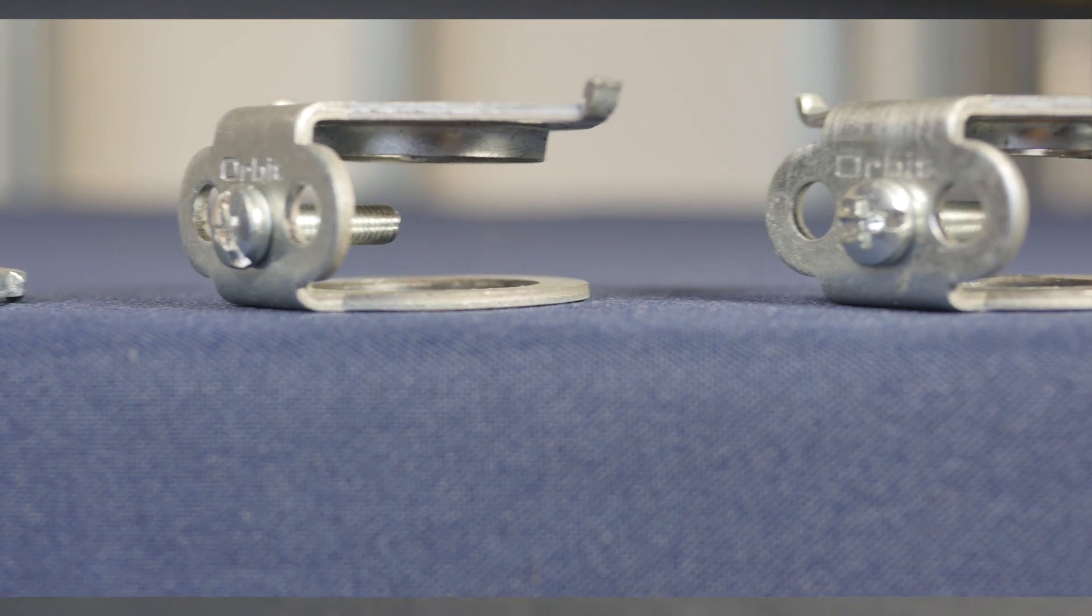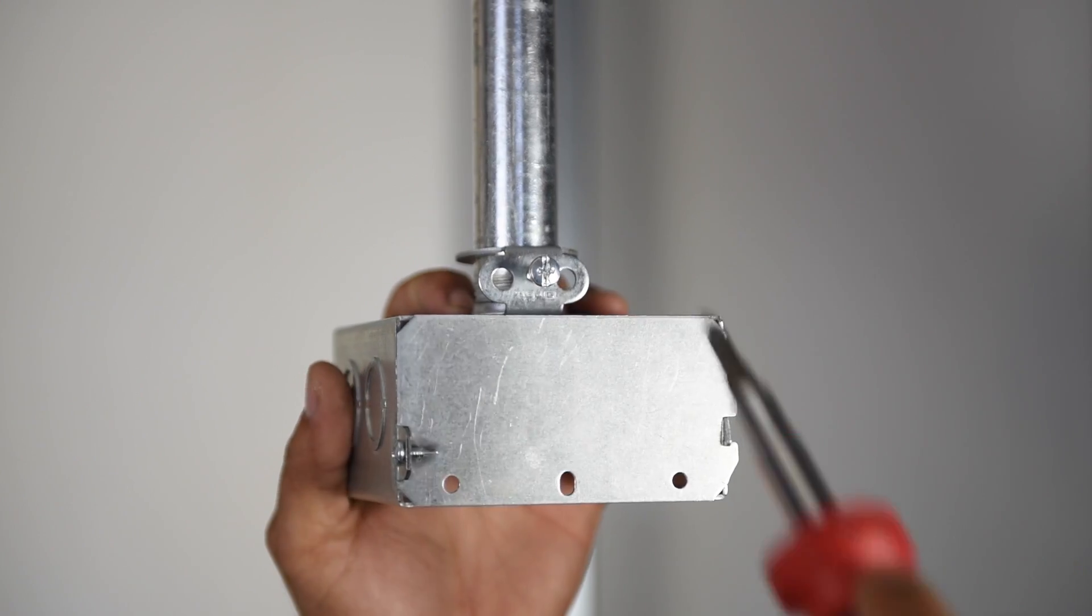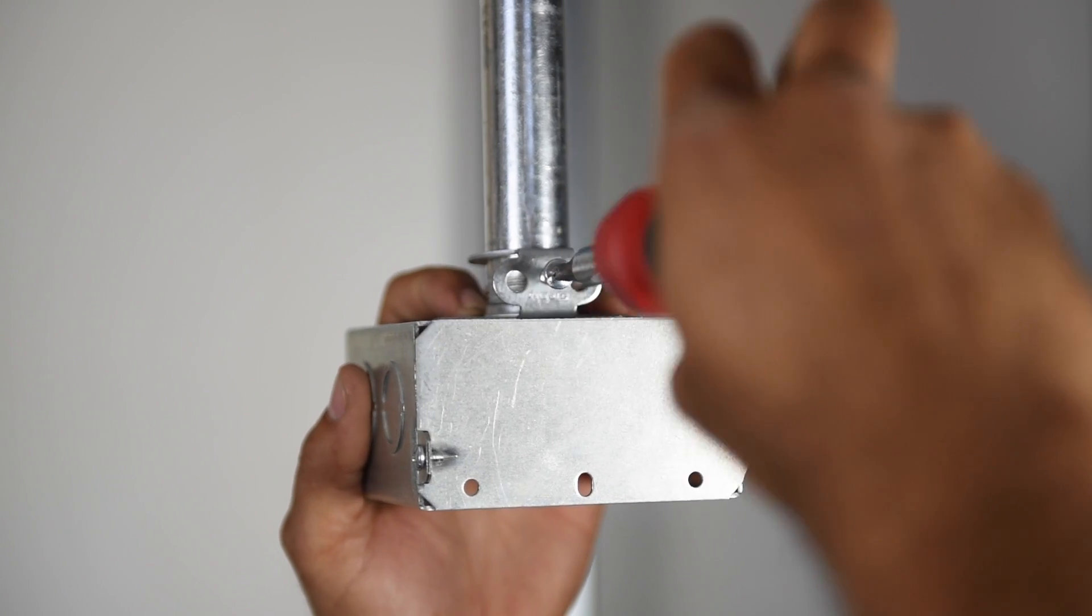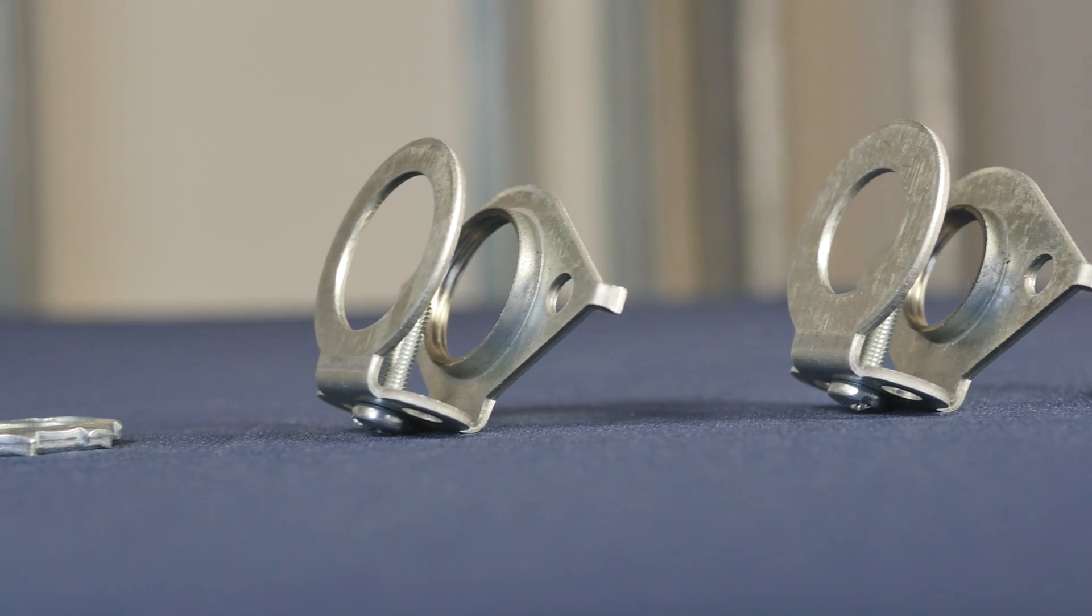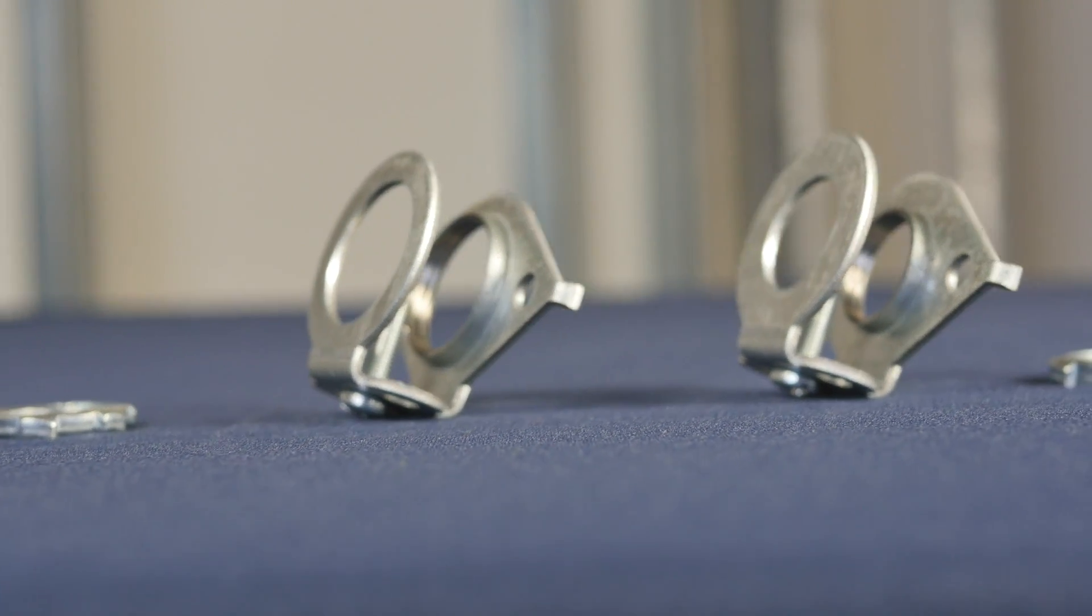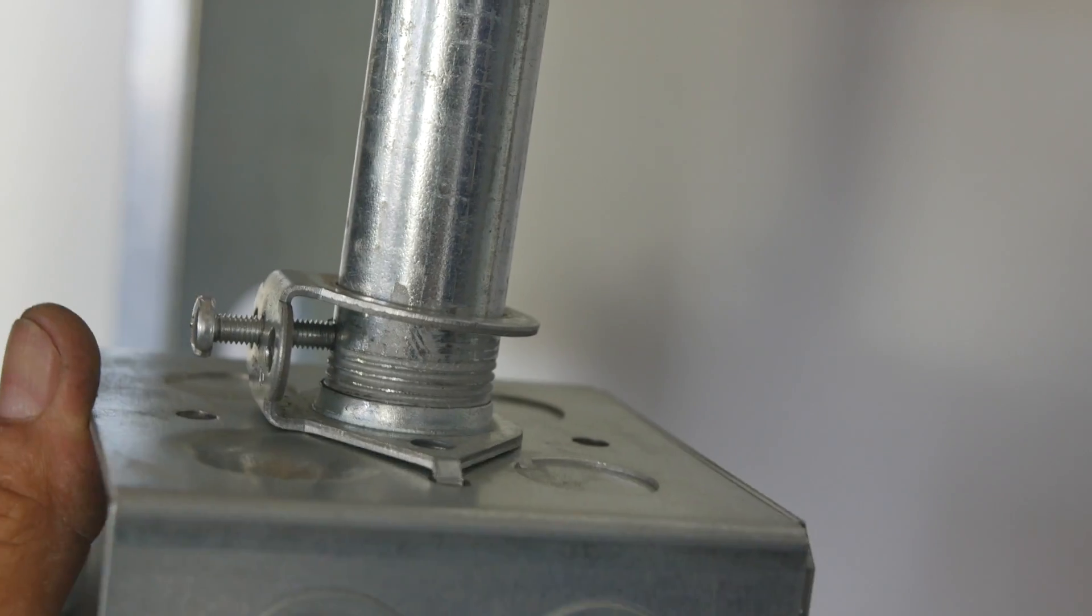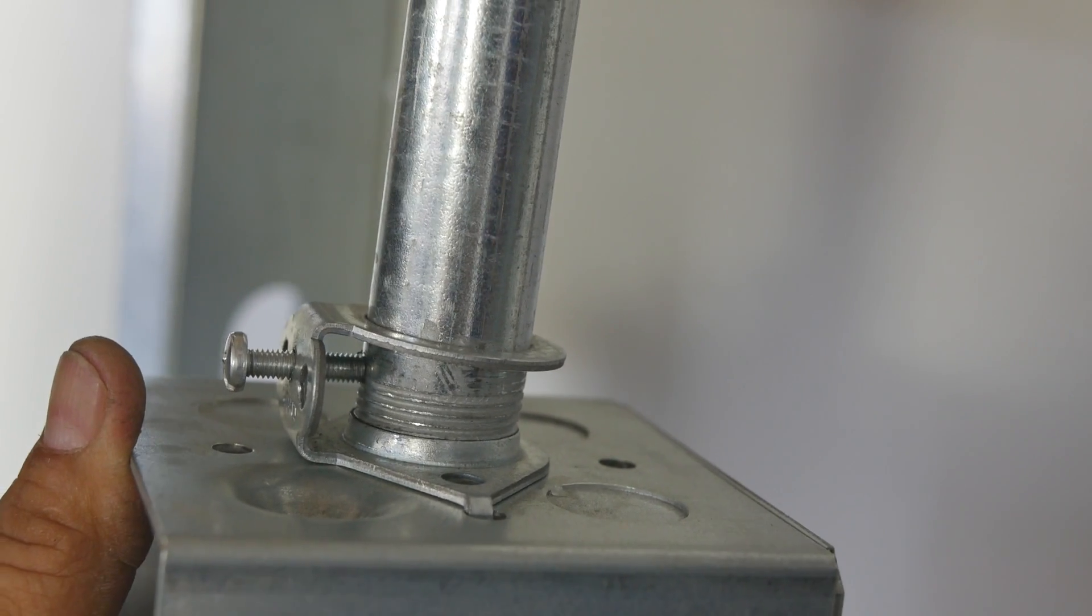The CLCSL comes with set screw and lock nut to secure conduit and boxes, ensuring a rigid installation. Hooks on the CLCSL prevent junction boxes from rotating by inserting itself into the holes located on the back of standard junction boxes.